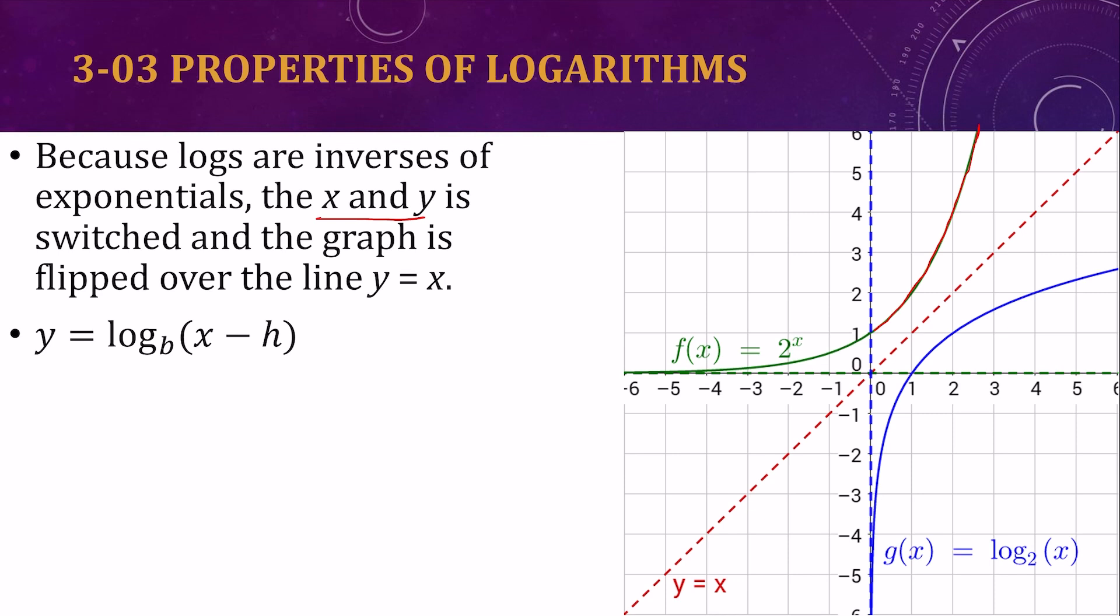And remember, inverses mean the x and y are switched. We're at the point 0, 1. It gives us the point 1, 0. So 1, 2 gives us the point 2, 1 and so on.